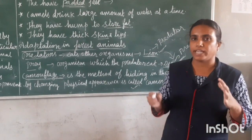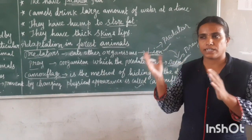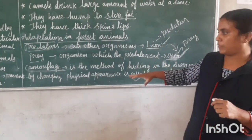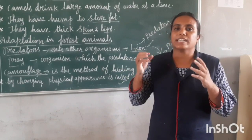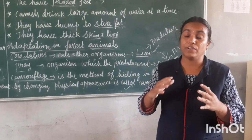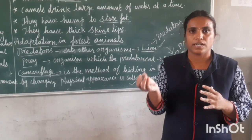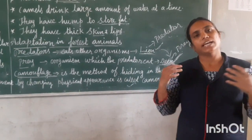Tiger also uses camouflage. Tigers have black stripes on an orange-yellow body, which helps them hide behind tall grass. The skin color blends with the dried grass, so they can easily chase and hunt their prey. Some insects like leaf insects and stick insects also mimic their surroundings by changing their body shape to look like a leaf or twig, making it hard for enemies to identify them.